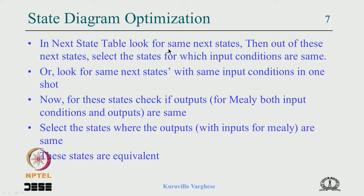You look for the same next state and find them out, then look at the input condition — that will give a subset. Then go to the next state table and look at all these states to check whether the outputs are the same, and choose those states. In the case of Mealy you have to check the input condition also; then you have the equivalent states and you can retain one.